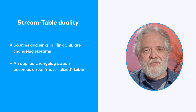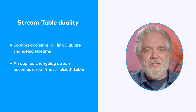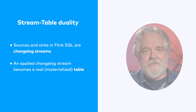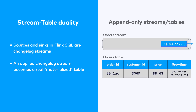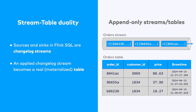We often use the term stream-table duality to talk about what's going on here. We can convert a changelog stream into a table by applying the changes in the stream to some storage where we want to hold a materialized table, perhaps in a database, a key-value store, or a data lake. Changelog streams come in a few different flavors. The simplest changelog streams contain nothing but insert events, such as this append-only stream of orders. As new messages arrive from the orders stream, they describe new orders that should be appended to the orders table. It's important to note that the orders in this table are immutable — they can't be changed in any way.